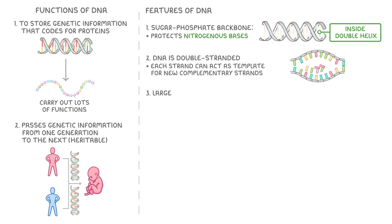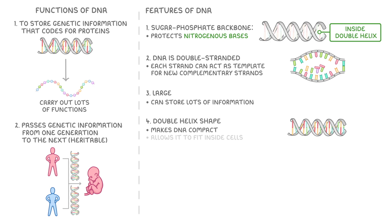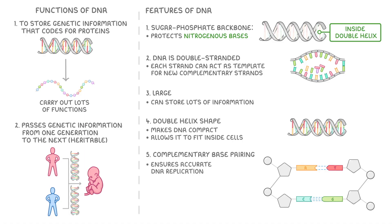Third, it's a large molecule, so it can store lots of information. Fourth, the double helix shape makes DNA compact and allows it to easily fit inside cells. Fifth, complementary base pairing ensures accurate DNA replication. And then finally, the weak hydrogen bonds between bases make it easy for the strands to separate during replication.